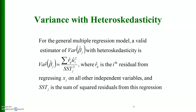For the general multiple regression model, a valid estimator of the variance of beta j-hat with heteroscedasticity is: variance of beta j-hat equals summation r_ij-hat squared times u_i-hat squared divided by SST_j squared, where r_ij-hat is the i-th residual from regressing x_j on all other independent variables, and SST_j is the sum of squared residuals from that regression.